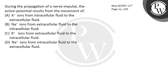Hello children, let's read this question. During the propagation of a nerve impulse, the action potential results from the movement of potassium ions from intracellular fluid to the extracellular fluid. This is incorrect.